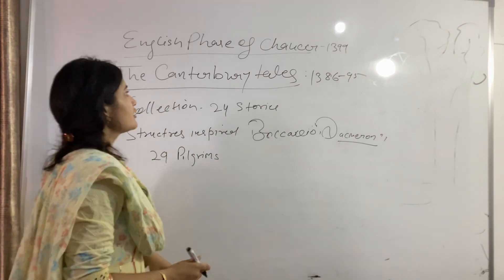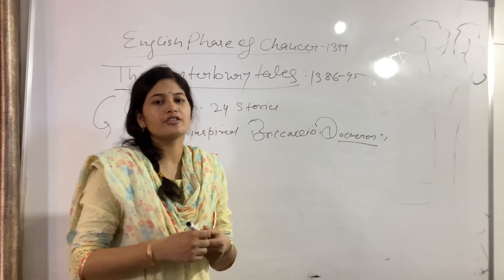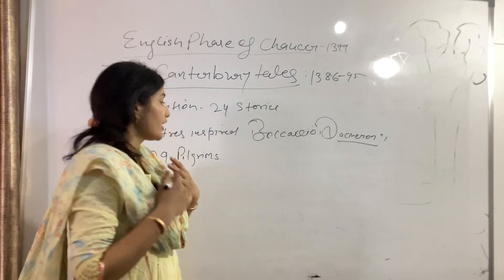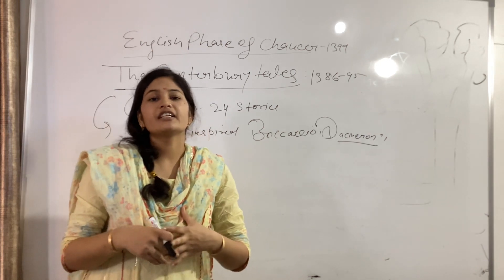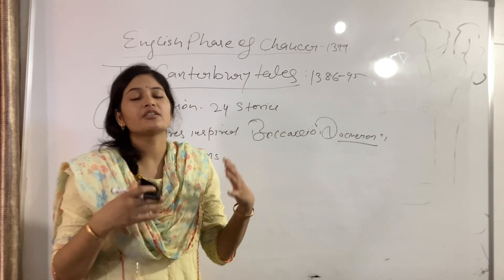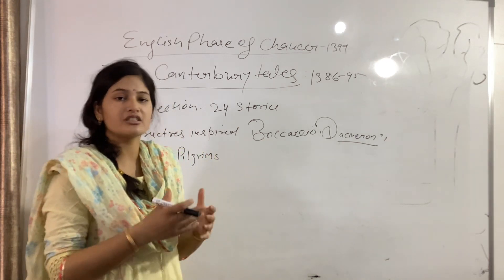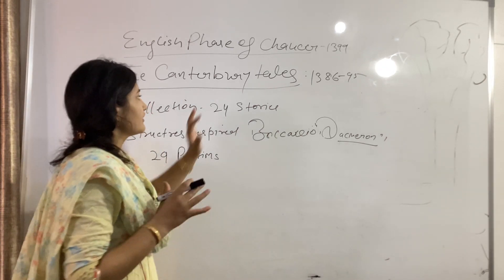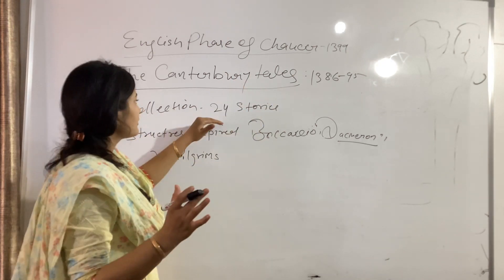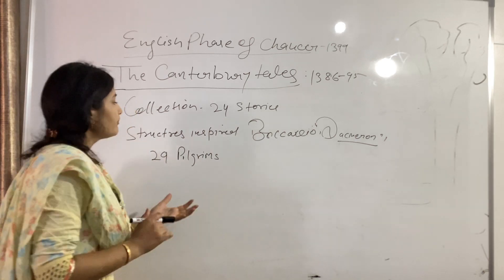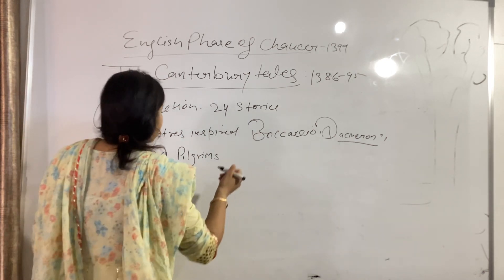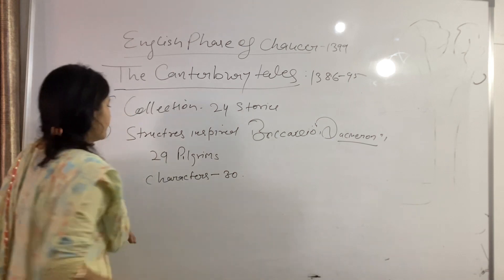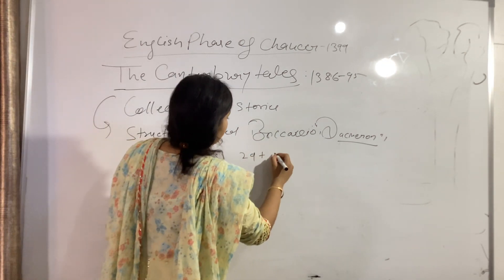In Canterbury Tales, there is a group of 29 pilgrims who decided to travel from London to Canterbury, to the shrine of Sir Thomas Becket. Now, if you are asked how many characters were there — the answer is 30, because 29 pilgrims plus one narrator equals 30 characters.